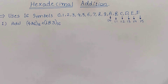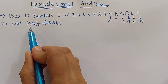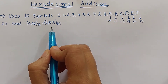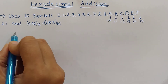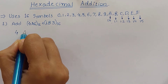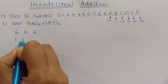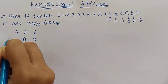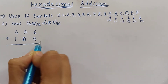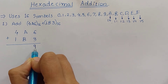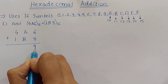Now we will understand hexadecimal addition by example. The first example is 4A6, which is a hexadecimal number, added with another hexadecimal number 1B3. We will write 4A6 and 1B3 and add these two hexadecimal numbers. 6 plus 3 is 9, so we write 9 as it is.